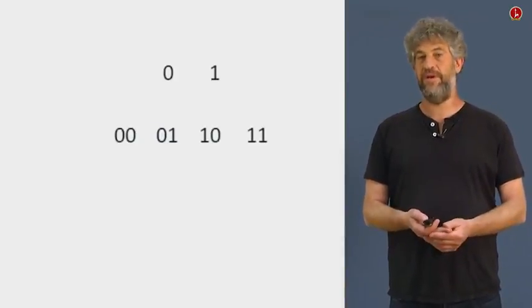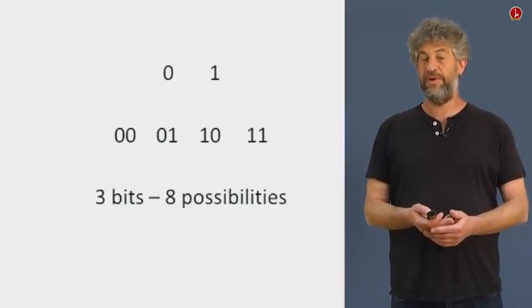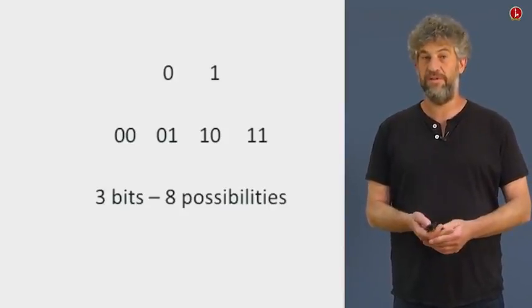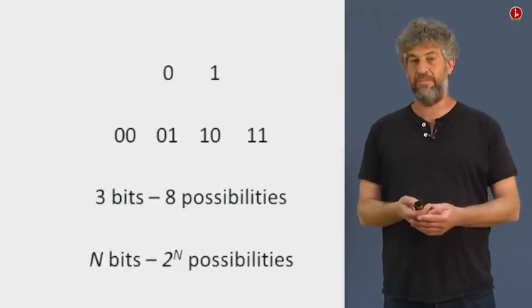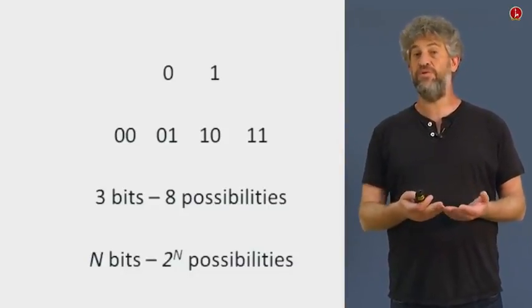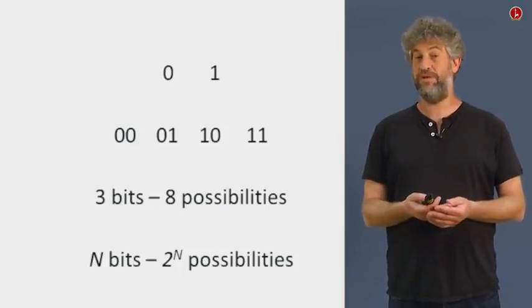Well, you definitely can put two of them together and then you get four possibilities. Three of them together, you get eight possibilities. In general, if you have n of them together, you have two to the n possibilities. And now you can represent any two to the n different things that you may want to.